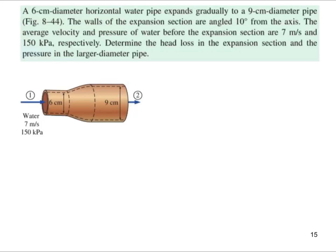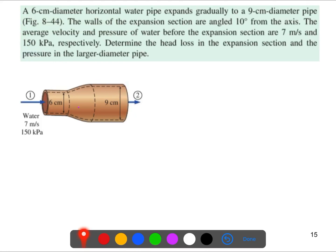Today's problem: a six centimeter diameter horizontal pipe expands gradually to nine centimeter diameter. As you can see in the schematic and cross-sectional view, it's not a sudden expansion but a gradual one. The walls of the expansion section are angled 10 degrees from the axis — so 10 degrees on each side, 20 degrees total.